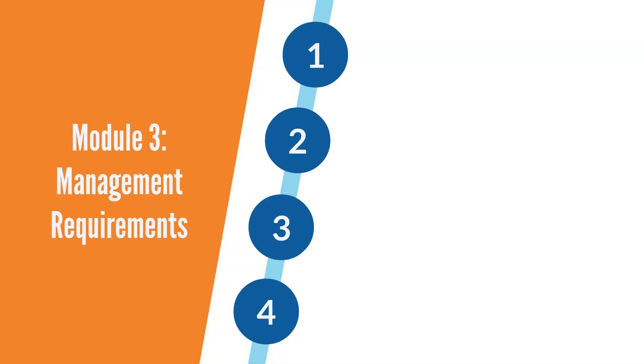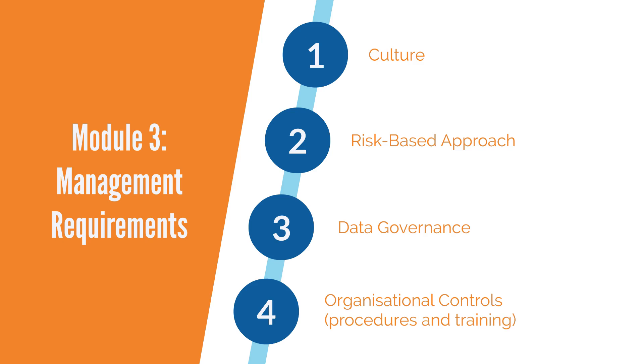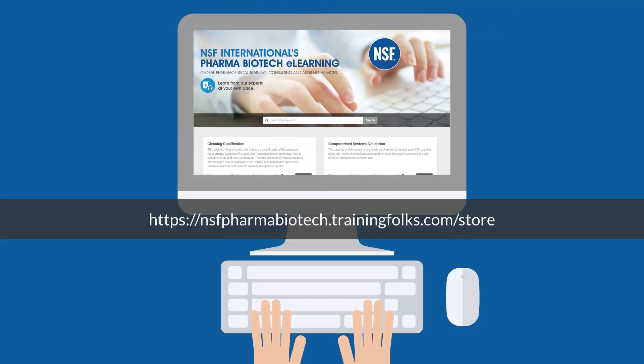The final module looks at management requirements, and we'll look at the culture that it takes to sustain good data integrity, a risk-based approach and data governance. The risk-based approach is how to identify potential issues, and the data governance is how you oversee the entire activity. The final part will be to look at the organisational controls, the procedures and training that underpin all of this effort and activity. These modules will be published in the coming months, so please do follow this link to register.